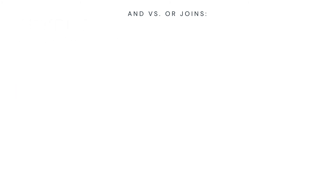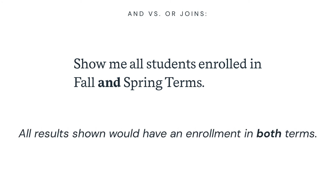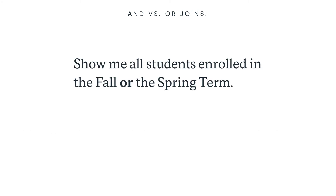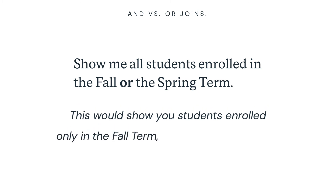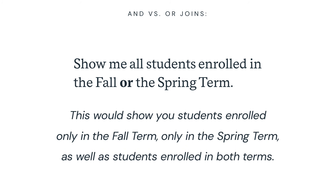Using the and join, you could say show me all students enrolled in fall and spring terms, and all the results would have an enrollment in both terms. You could also use the or join and say show me all students enrolled in the fall or the spring term, which would show you students enrolled only in the fall term, only in the spring term, as well as students enrolled in both terms.